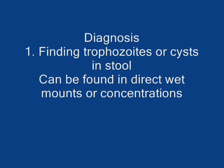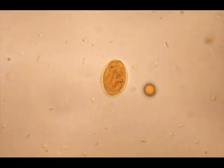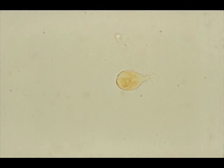Diagnosis. Characteristically, it is by finding the trophozoites or the cysts in stool specimens. They can be found in direct wet mounts or in concentrations. In this picture is a cyst seen in a sample with the addition of Lugol's iodine to help see the internal structures. This next picture is a Giardia trophozoite, also in an iodine-stained wet mount. If you were to see an actual trophozoite in a fresh stool within 30 minutes, the motility will appear as a falling leaf.